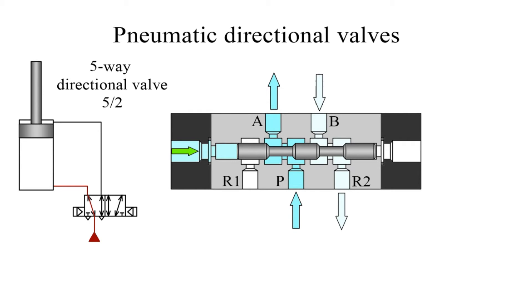The flow path, when actuated at the left end of the valve, is from port P to port A and from port B to port R2.